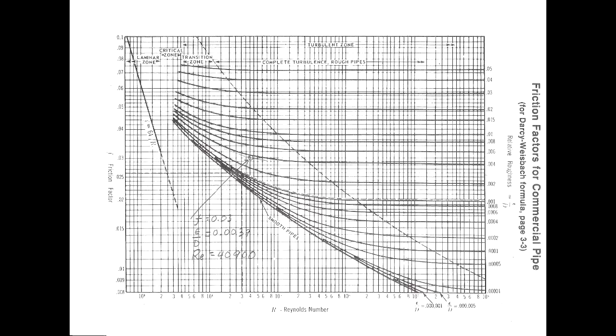The right-hand vertical axis of the Moody diagram is the surface roughness epsilon divided by the diameter, and the bottom x-axis is the Reynolds number.